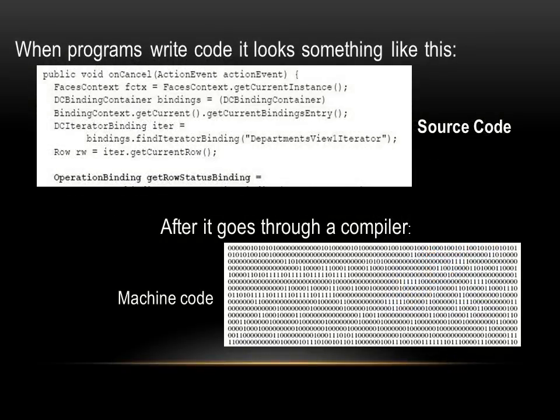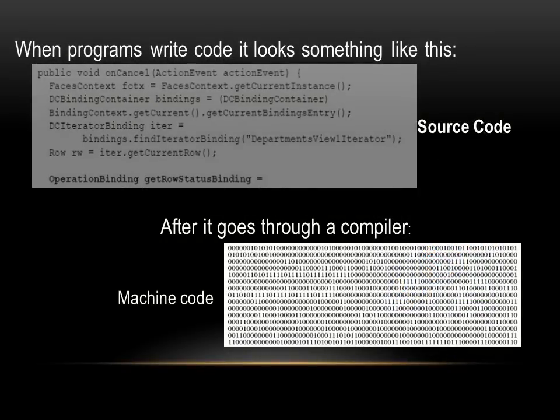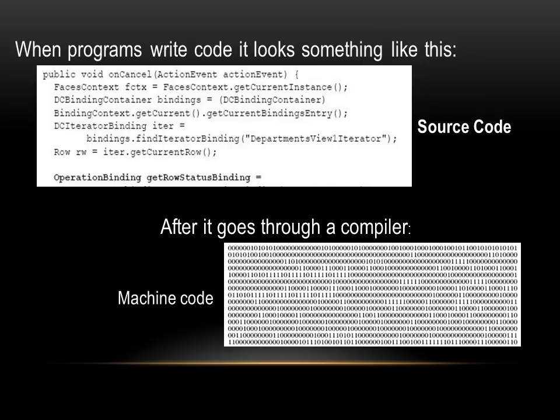To clarify, source code is a program that is written by the programmer and looks like this. It becomes machine code or binary after going through a special program called a compiler.